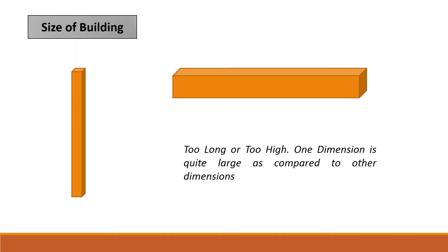In an architectural configuration, the first important thing to be noted for architects is the size of the building. A too long, too high, or too wide building — where one dimension is quite larger than the other — makes one section quite larger than the other section. This leads to development of lateral earthquake forces within the structure, making one side or one plane of the section weaker compared to the other.